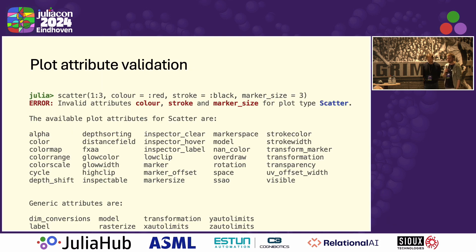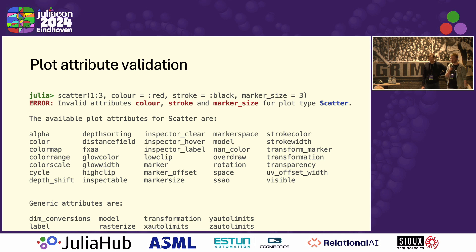New is the plot attribute validation. We finally fixed the problem where keyword arguments that were wrong were silently swallowed by Maki. Now you get nicer errors that point you to what's going on and remind you what options you have. I think this will probably save a couple of tens of thousands of hours of scientist time.